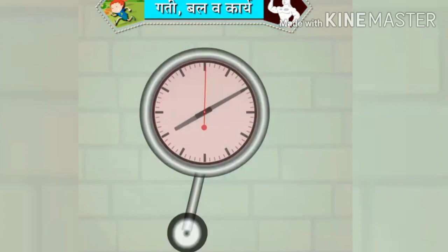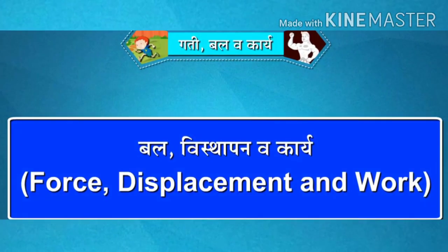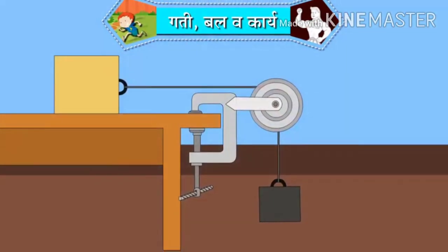Then your next paragraph: Force, displacement and work. बल, विस्थापन व कार्य. In the figure alongside, a string is attached to a wooden block on a table. It is passed over a pulley and tied to a weight. On applying a sufficient weight, the block will be seen to move.